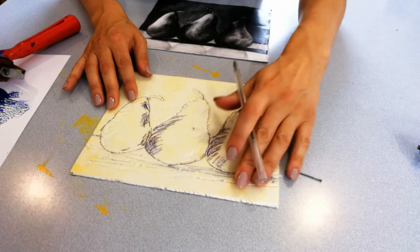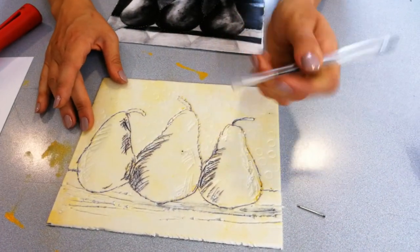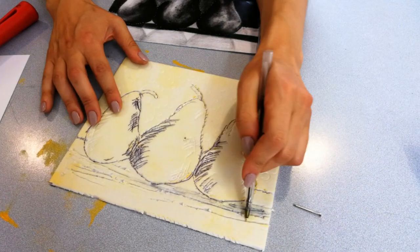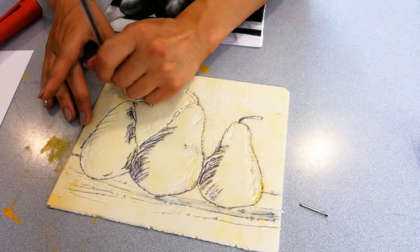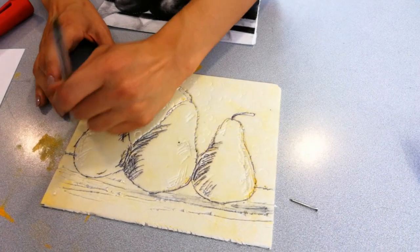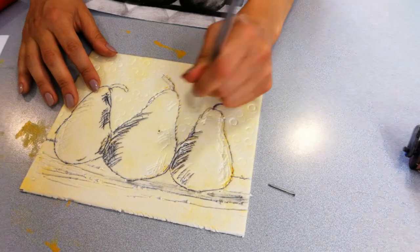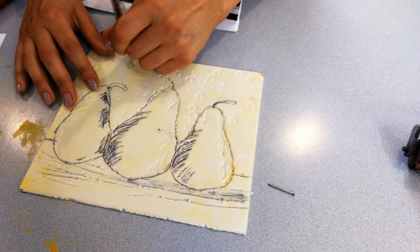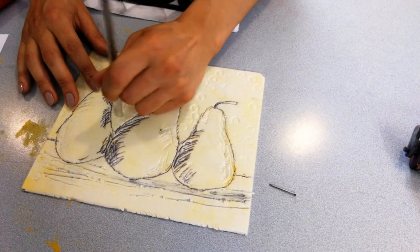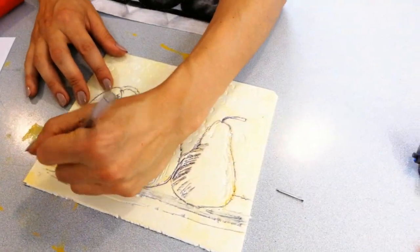So create all your marks. You can add a little bit of texture like this. I'm using the end of a pen, scratching in any marks that you feel that you want to create to create a fuller outcome. Press a bit harder just to get more of a pattern. A few more lines here just to show more shadow.